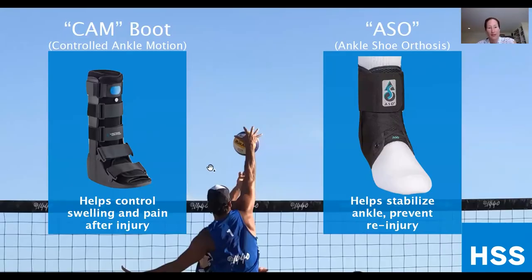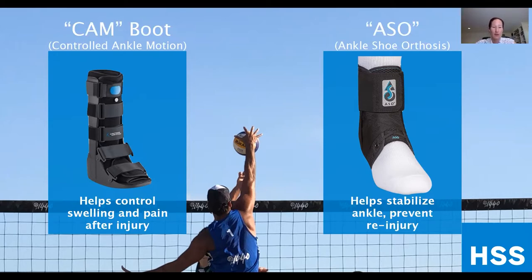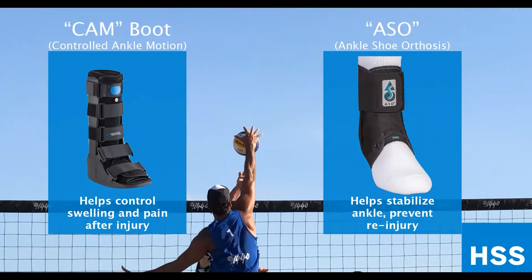When I talk about a brace and a boot, on the left you can see a CAM boot — a controlled ankle motion boot. It might look like overkill, but these are really helpful for controlling swelling and pain after an injury. Maybe you just need to wear it for a day or two; for more severe injuries, people may wear it for weeks. On the right side is an ASO — an ankle shoe orthosis — a great brace for people with ankle sprains. It helps stabilize the ankle and prevent re-injury, and it can be worn inside a sneaker.